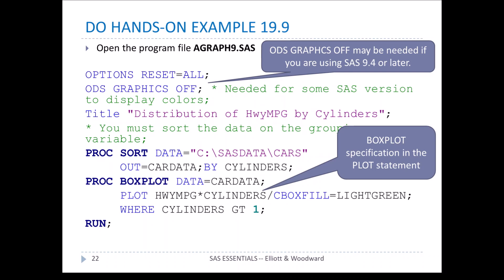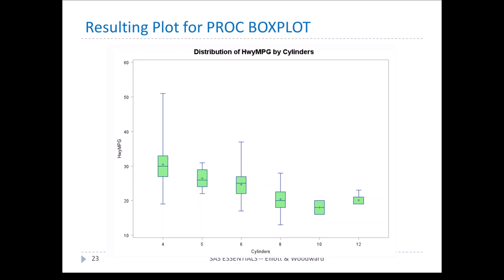Let's look at example 19.9. Open up the file called agraph9. We're going to reset all the options and turn ODS graphics off, which you may need for the colors to come out right. We sort the cars data by cylinders, then plot highway miles per gallon by cylinders using cboxfill of light green, where cylinders is greater than 1. We're leaving off engines that don't have any cylinders, which are a few of the Mazda versions. Here's the resulting box plot — we can see cylinders 4, 5, 6, 8, 10, and 12 with box plots for each.